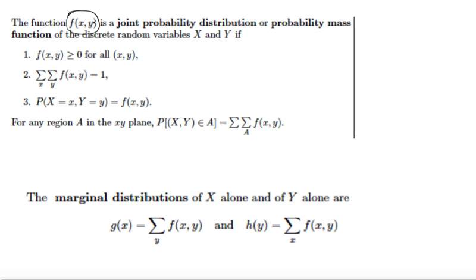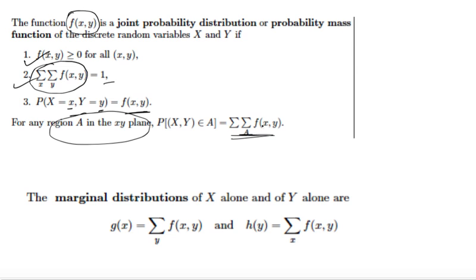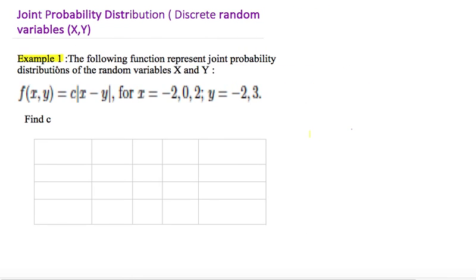The notation used for the joint probability distribution function is f(x, y), where x and y are two random variables and we want to find the probability associated with them jointly. This is also known as the probability mass function. Two key properties: first, all values of f(x, y) are either equal to 0 or greater than 0 — always non-negative. Second, when we add all cases of f(x, y), the total probability equals 1. f(x, y) is the probability that X equals x and Y equals y, and for any specific region we sum over all x and y in that region.